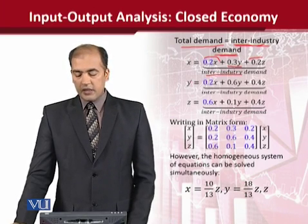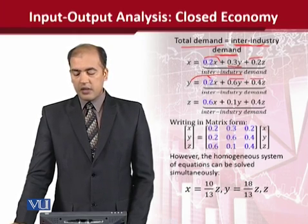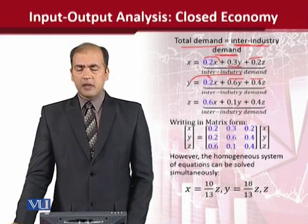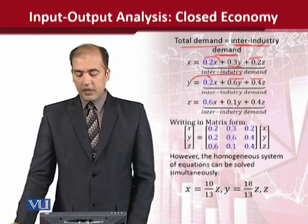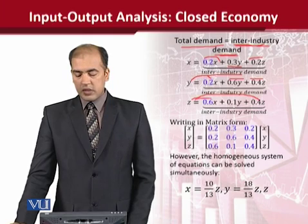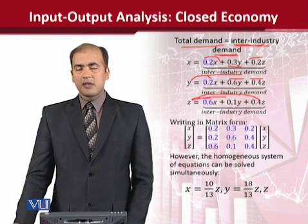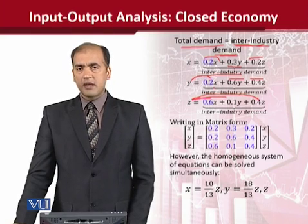Industry y, the second industry, produces output for x, for itself, and for the third industry. Similarly, z also produces for itself and for the other industries. In this way, these relationships are simpler because there is no external demand.